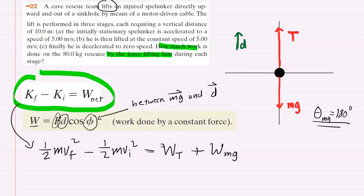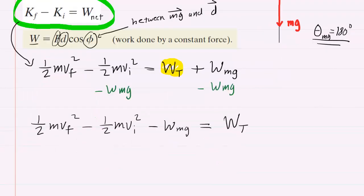Now because the question is asking us to determine the work done by tension, let's solve the equation for that. So let's subtract the work done by gravity on both sides of this equation. And then we can replace the work done by gravity with the expression of the gravitational force mg multiplied by the distance traveled multiplied by the cosine of the angle between gravity and the displacement, which for part A will be 180 degrees.